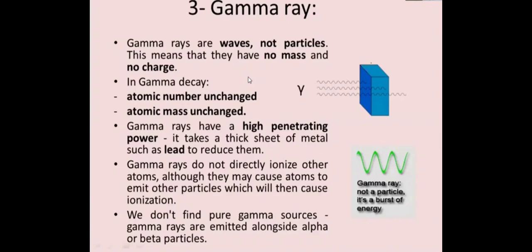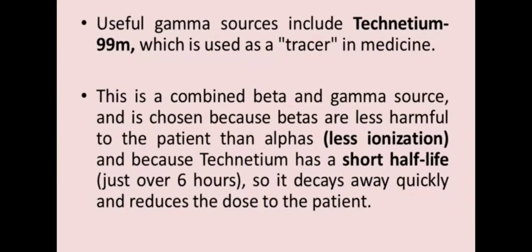Gamma rays are usually used for diagnostic purposes because of their high penetrating power. A useful gamma source is technetium-99m, used as a tracer in medicine for diagnostic purposes. It is a combined beta and gamma source — beta is chosen because beta particles are less harmful to the patient than alphas, having less ionization power. Technetium-99m has a short half-life of just over 6 hours, so it decays away quickly and reduces the dose to the patient.